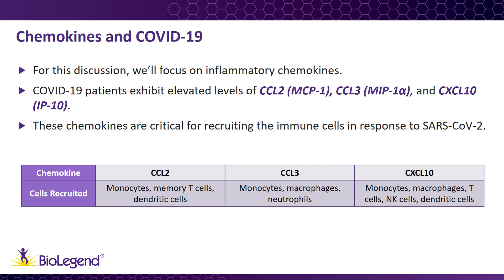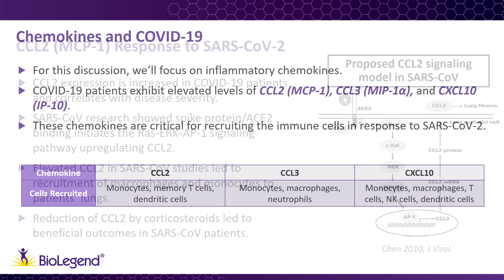CCL2 is capable of recruiting monocytes, memory T-cells, and dendritic cells. CCL3 is capable of recruiting monocytes, macrophages, and neutrophils. CXCL10 is capable of recruiting monocytes, macrophages, T-cells, natural killer cells, and dendritic cells. In the following slides, we will go into more detail on each of these chemokines and what roles they play in the inflammatory response to SARS-CoV-2.